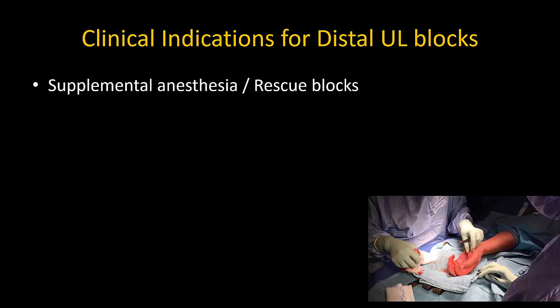The indications for distal upper limb blocks are as follows. First, supplemental anesthesia or rescue blocks for brachial plexus blocks that fail to provide complete surgical anesthesia.